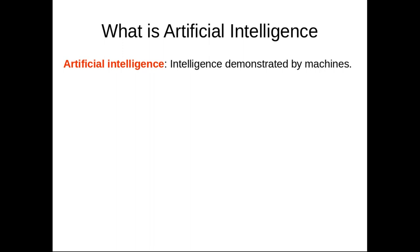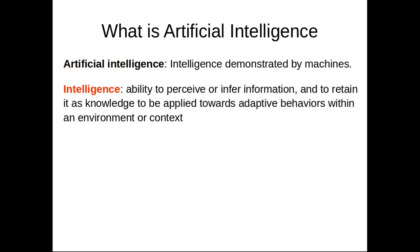So what is artificial intelligence? Artificial intelligence is intelligence demonstrated by machines. Now what do we mean by intelligence? Intelligence is the ability to perceive or infer information and to retain it as knowledge, to be applied towards adaptive behaviors within an environment or context.